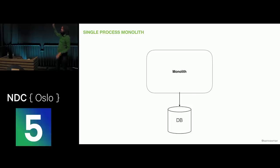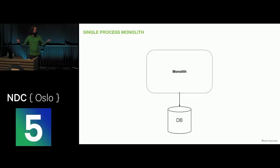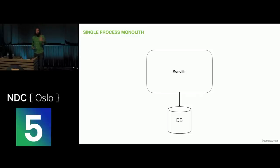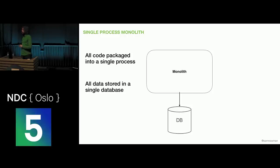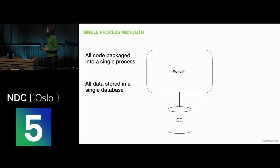Just to point out, this is actually a type of distributed system — just a really simple one. A distributed system is one where you've got two computers talking to each other over remote networks, and this does fall into that bracket. All the code is packaged together into a single process, all the data stored in a single database. It's a type of system architecture which has done us very well, and there are lots of companies that have been incredibly successful building monolithic architectures.